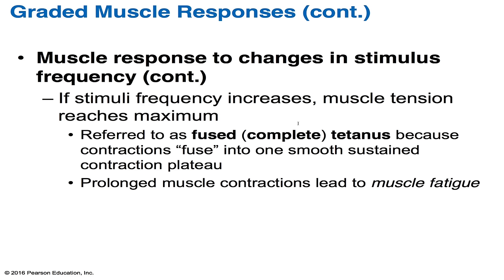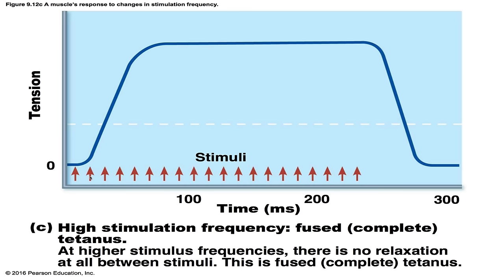If the stimulus frequency increases further, muscle tension reaches maximum, referred to as a fused or complete tetanus, because the contraction is fused into one smooth, sustained contraction plateau. This prolonged muscle contraction leads to muscle fatigue. In the myogram, you see very short time intervals between stimuli, producing this sustained fused tetanus. This doesn't happen in real life except extremely rarely — for example, in an emergency where someone gets superhuman strength and pushes a 2,000 to 3,000 pound vehicle off a trapped person. That is when you'd see this fused tetanus occur.